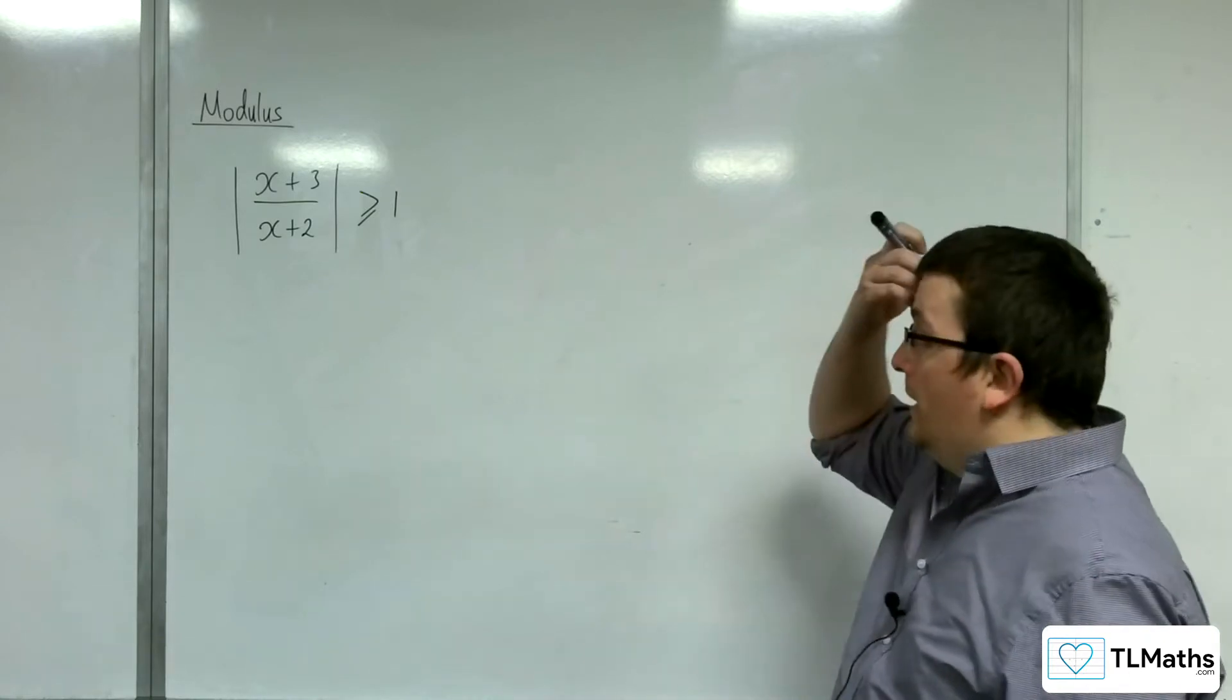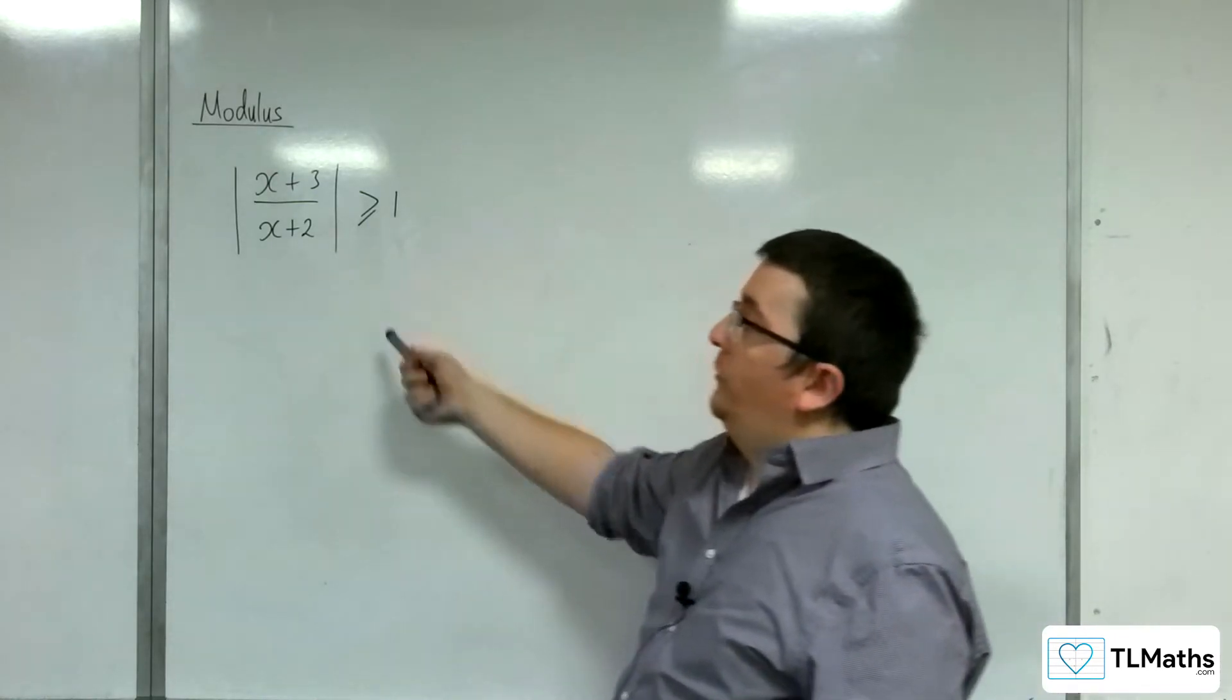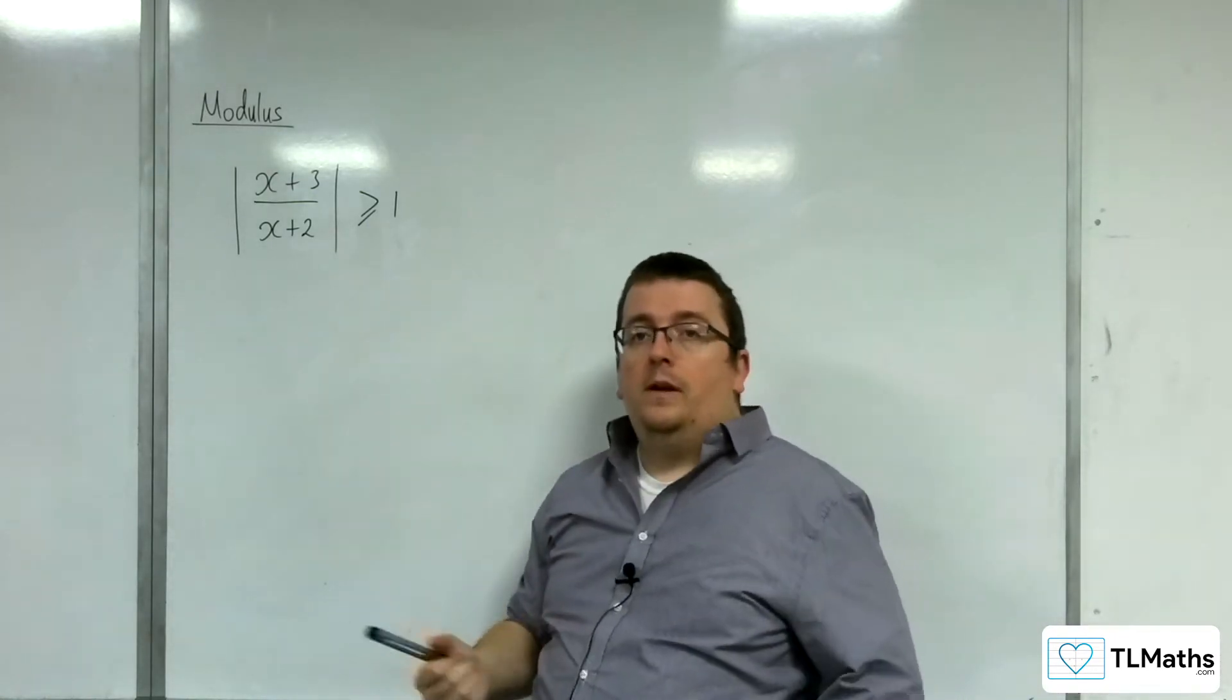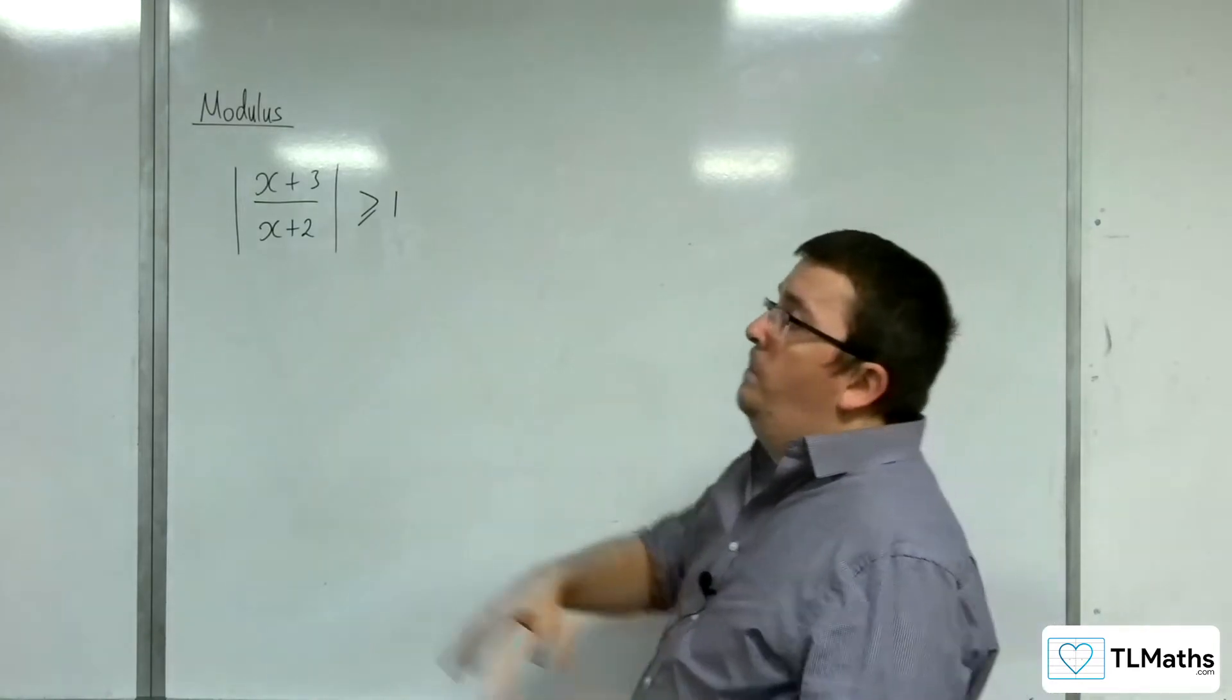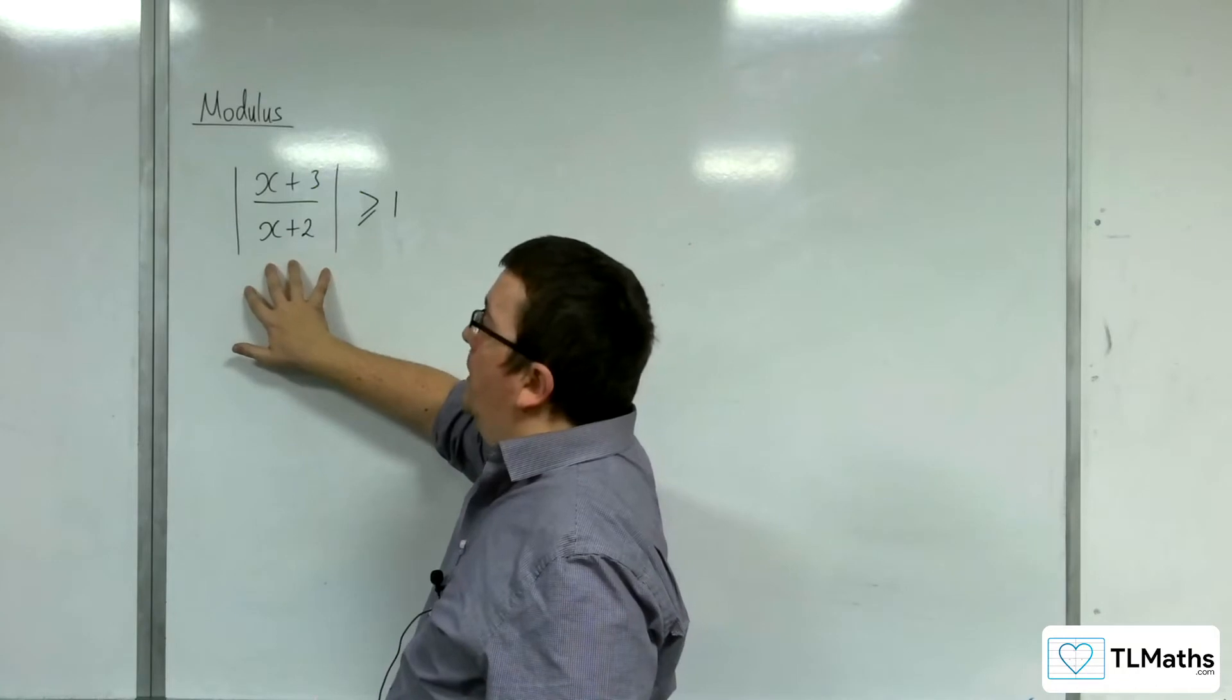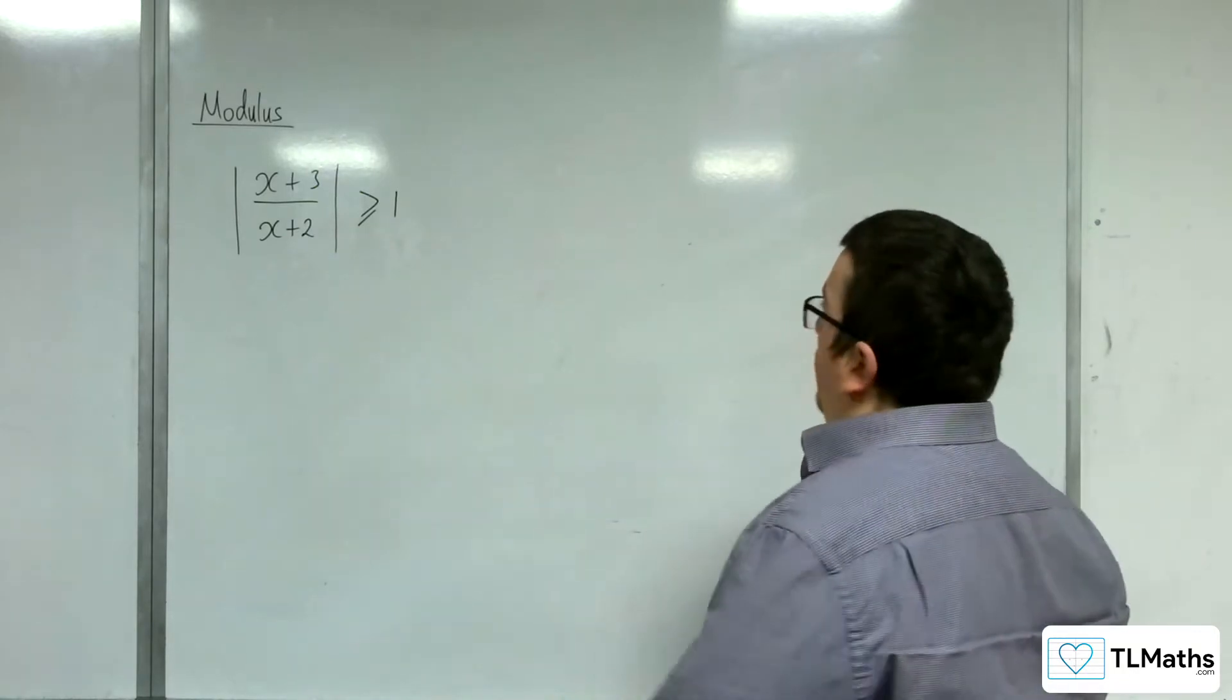We know how to sketch the left-hand side, how to solve it if it was an equation to find the points of intersection, and then we'll be asking where is this graph above or equal to 1. So that's the process we'll go through.